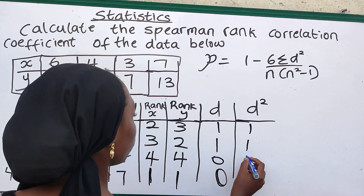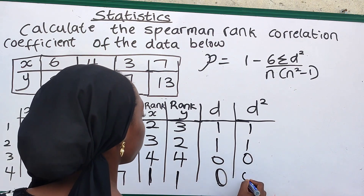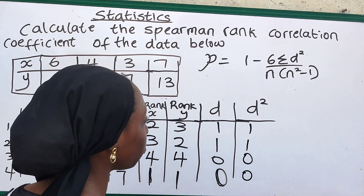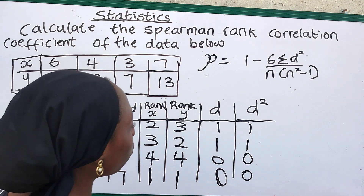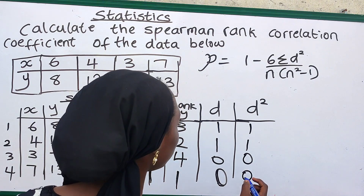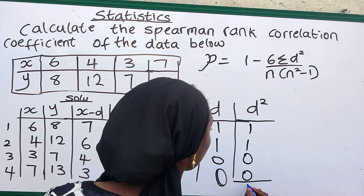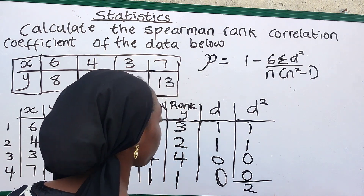So our D squared values are: 1, 1, 0, 0. After that we can solve our summation of D squared, which will now be equal to 2.